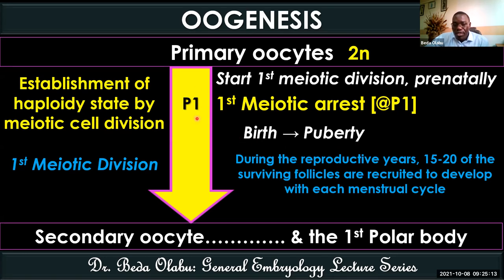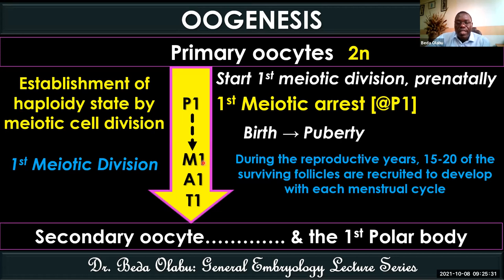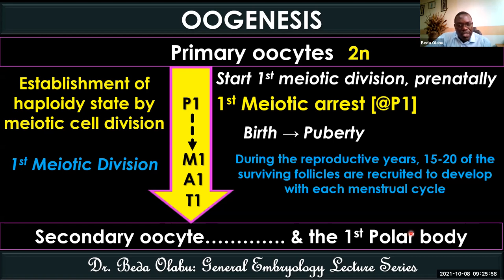Imagine a success story: 15 to 20 follicles have been recruited. Those recruited will continue cell division — entering metaphase one, anaphase one, and finally telophase one. After telophase one, we have two daughter cells: one with large cytoplasm called the secondary oocyte, and one with hardly any cytoplasm called the first polar body. You can only have the secondary oocyte and first polar body after puberty, because there has been a prophase one arrest.